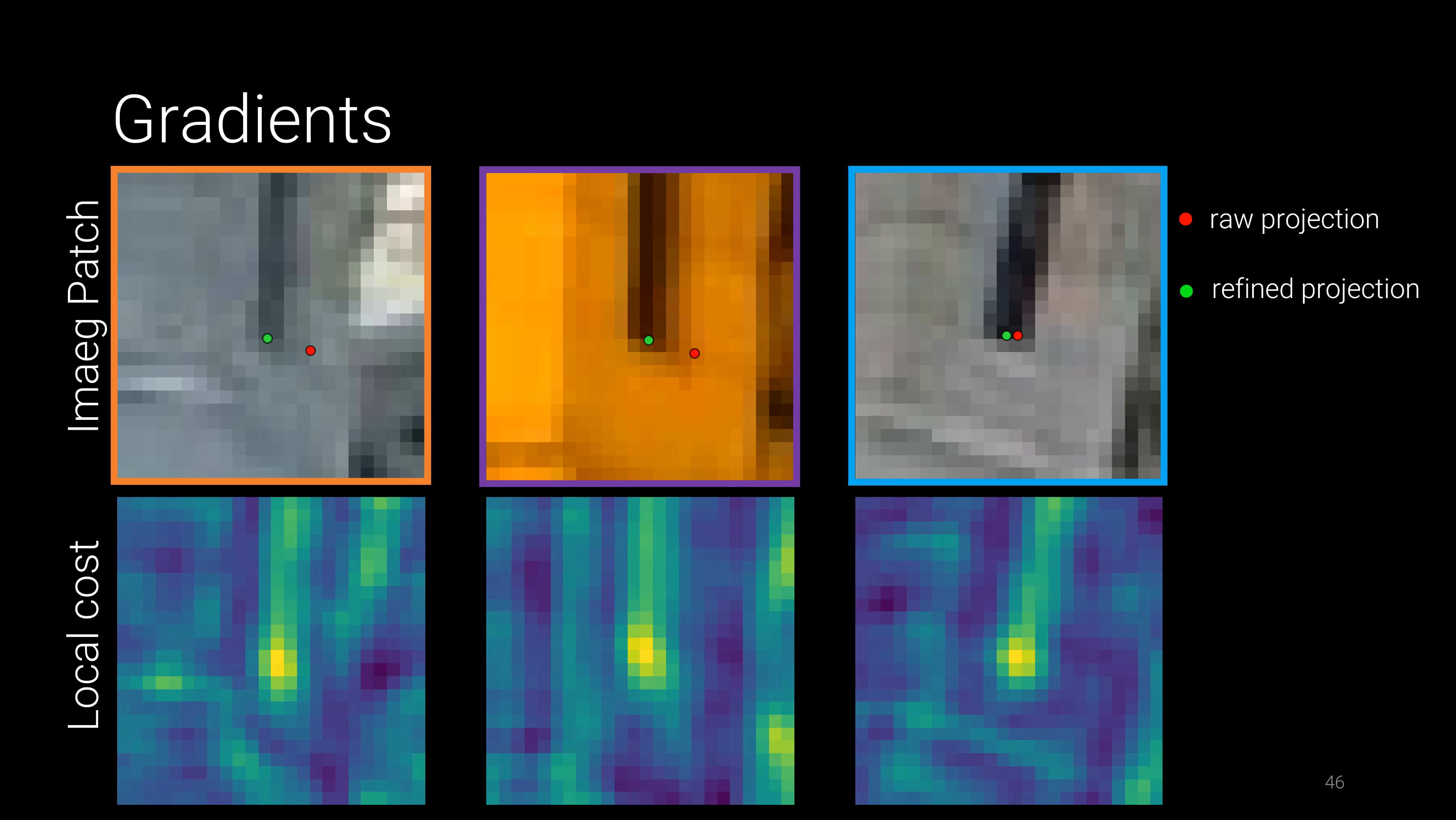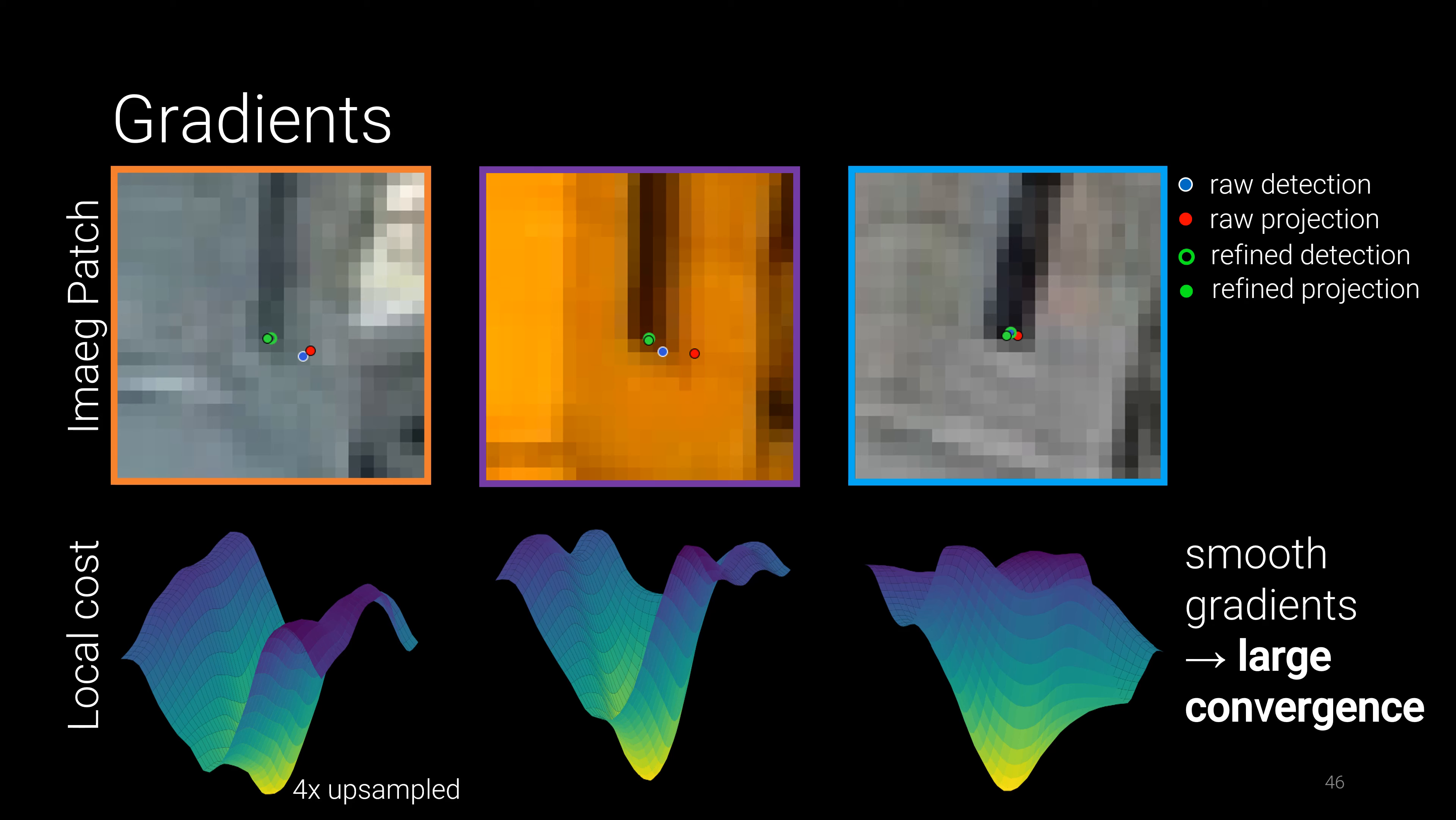The refined reprojections are much better localized compared to the geometric counterpart, and featuremetric BA allows to further reduce noise over keypoint adjustment by utilizing geometric constraints. The obtained gradients towards the robust reference are locally smooth, allowing large convergence from coarse priors.